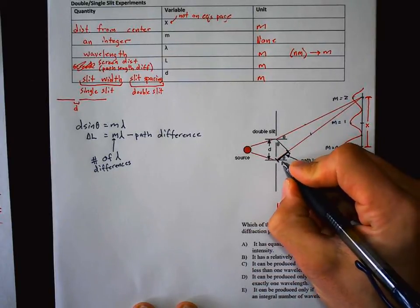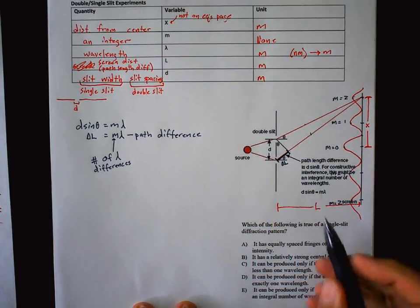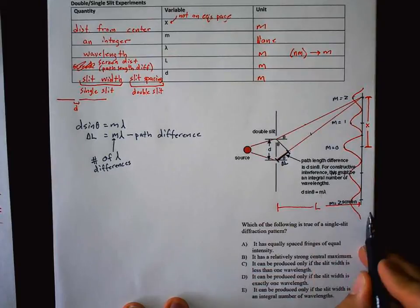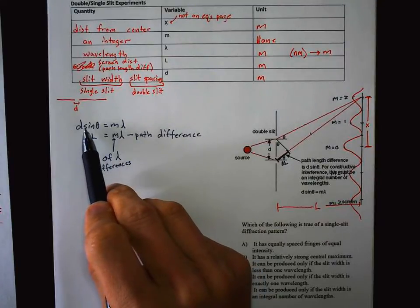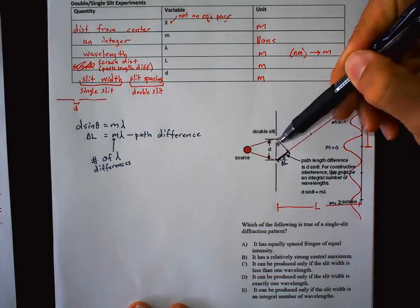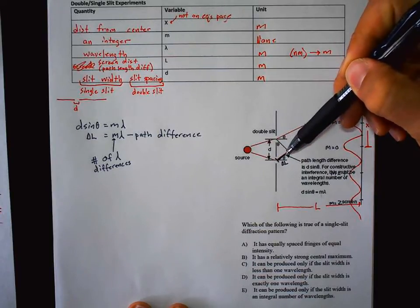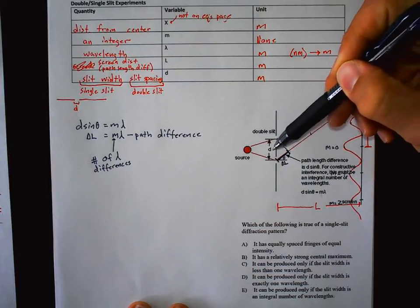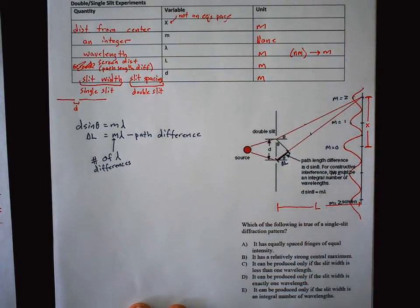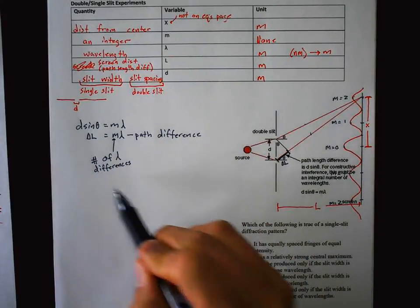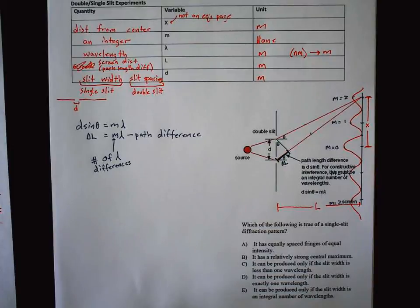That ΔL is the path difference. Note that capital L is also used for screen distance, so be careful. The path difference can also be set equal to D·sinθ — placing θ at the appropriate angle, the sine relates the hypotenuse and θ to give the path difference. This is only helpful for finding the path difference. From these equations and the small angle approximation you can derive the next equation, but it's easier to just memorize it.